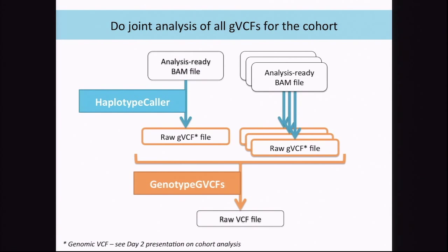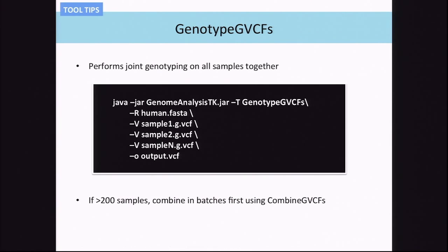Now that we have all our raw GVCF files from all samples, we run GenotypGVCFs to end up with a final VCF. The basic command is: java -jar GATK, tool GenotypeGVCFs, your input reference, and -V for each GVCF input. The output will be a VCF with all your samples. If you have more than 200 samples, we recommend running CombineGVCFs to combine those GVCFs first, then run GenotypeGVCFs.